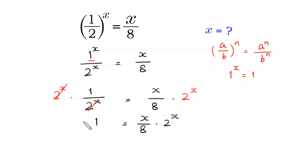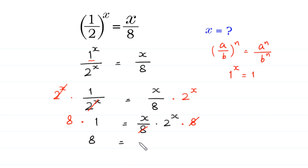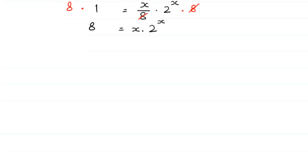Now, we multiply both sides of this equation by 8. On the right side, the 8 cancels with the 8 in the denominator. And 8 times 1 gives us 8, so 8 is equal to x times 2^x. We then write x times 2^x on the left side and 8 on the right side.